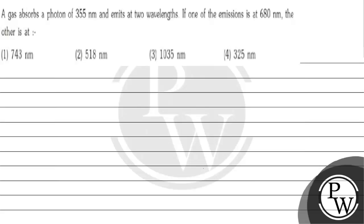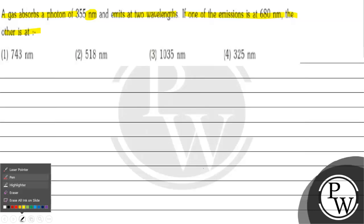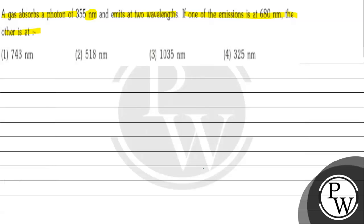Hello, let's read this question. A gas absorbs a photon of 355 nanometers and emits at two wavelengths. If one of the emissions is at 680 nanometers, the other is at: option 1 — 743 nanometers, option 2 — 580 nanometers, option 3 — 1035 nanometers, option 4 — 325 nanometers.